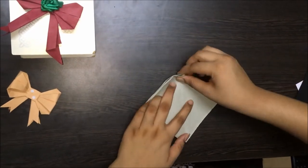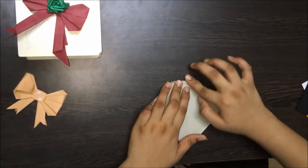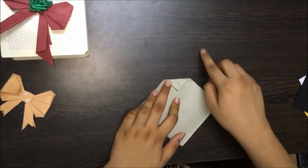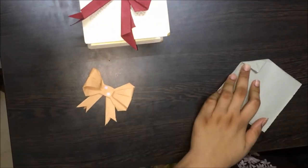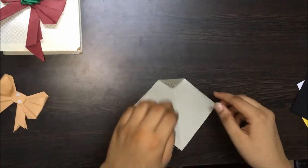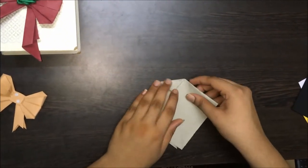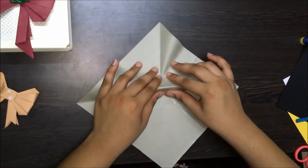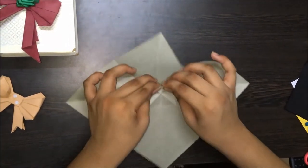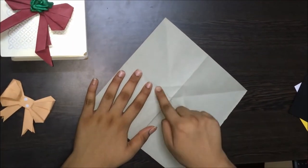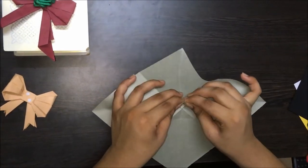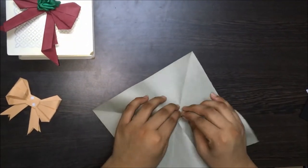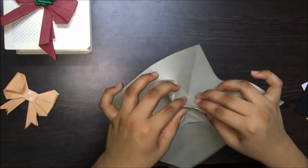Now fold about one centimeter of the paper inside. The larger the amount of paper you fold inside, the bigger is the middle square of the bow. So I folded this inside. Now let's open this up. I'm just going to make a stronger crease around the small square. Let's make this stronger. This side.